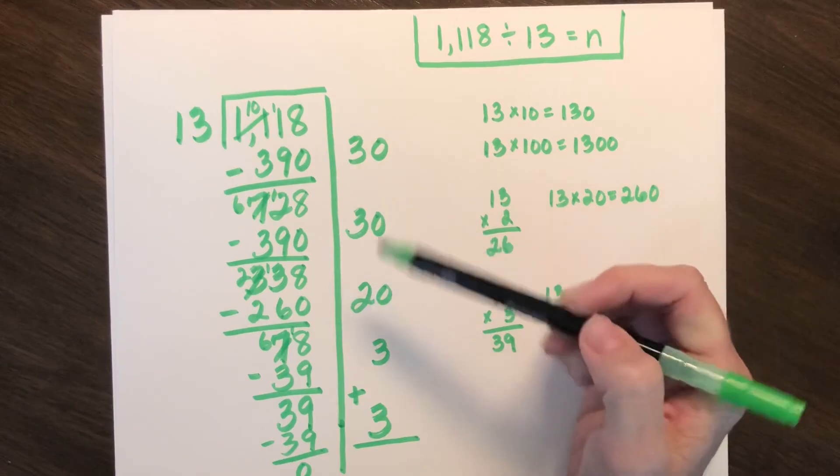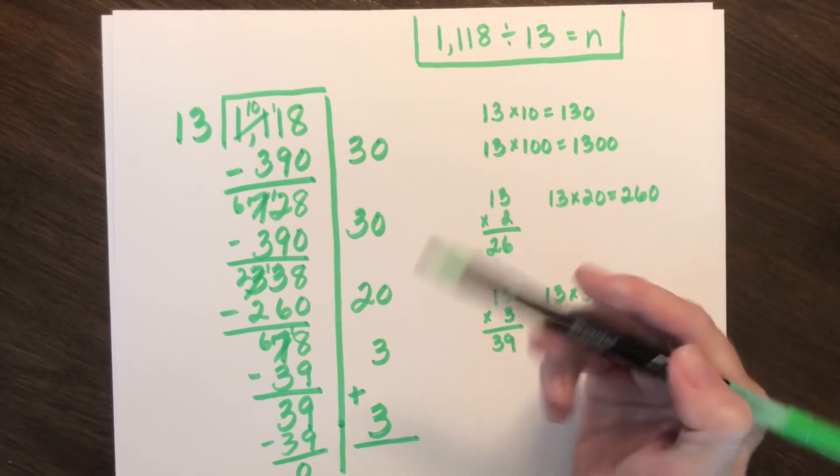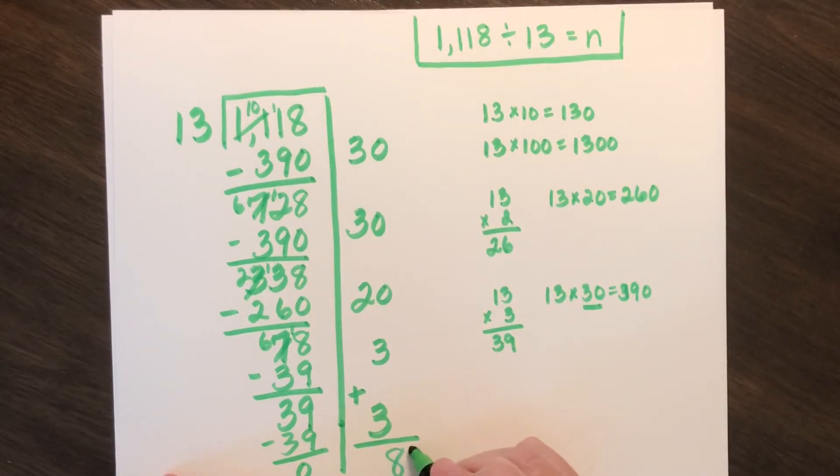30 plus 30 is 60, plus 20 is 80, 83, 86. So I know that my answer is 86.